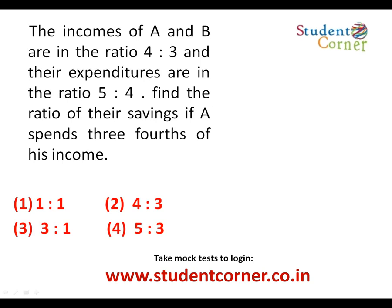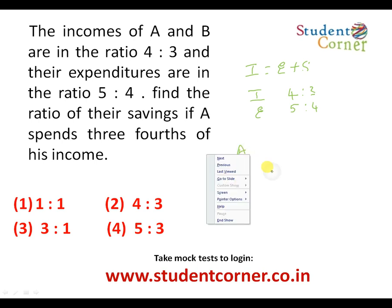The incomes of A and B are in the ratio 4 is to 5. The basic formula is: income = expenditure + savings. The income ratio is 4 to 3, and the expenditure ratio is 5 to 4. Find the ratio of savings, given that A spends three-fourths of his income.